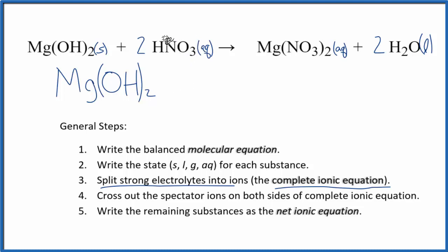For the nitric acid, hydrogen is group 1 so it has a 1+ and the nitrate ion has a 1-. Very good one to remember. So we have 2H+ ions plus the 2 nitrate ions.